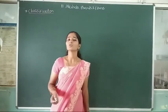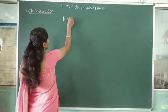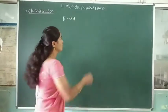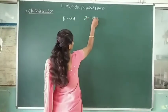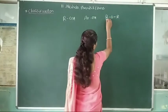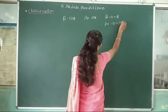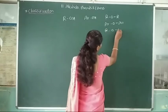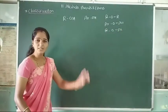The functional group of alcohol is ROH, functional group of phenol is ArOH, and functional group of ether is ROR (or ArOAr). These three functional groups were discussed in the last lecture.